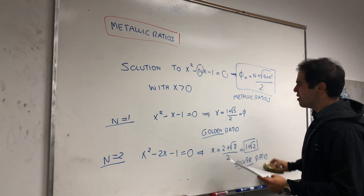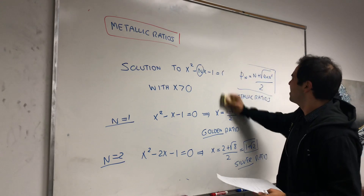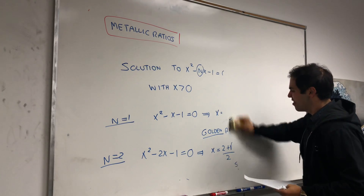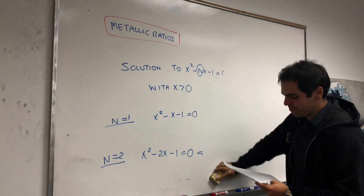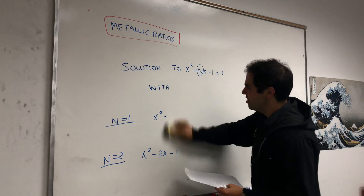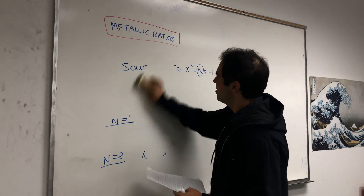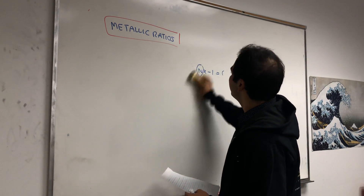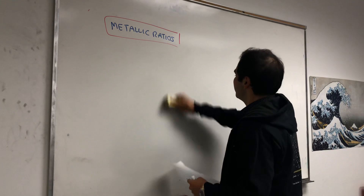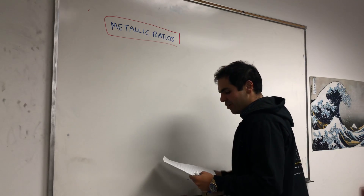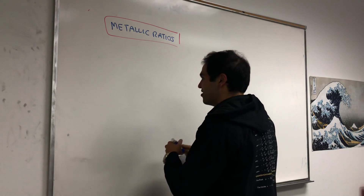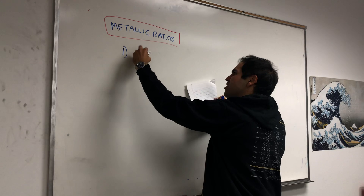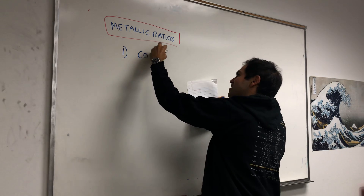So what are the properties that they satisfy, or where do they appear? My main point is to show that they generalize the golden ratio. The first place they appear is in continued fractions.